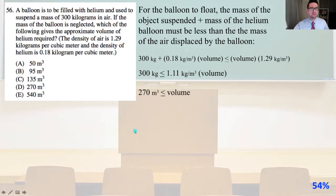Number 56. A balloon is to be filled with helium and used to suspend a mass of 300 kg in air. If the mass of the balloon is neglected, which of the following gives the approximate volume of helium required? The density of air is 1.29 kg per cubic meter and the density of helium is 0.18 kg per cubic meter.